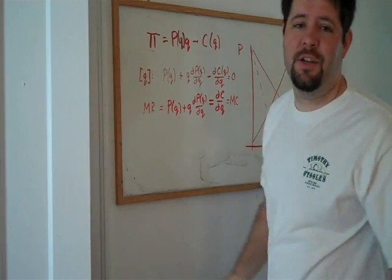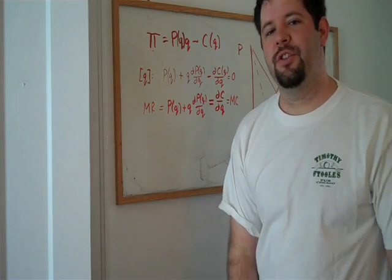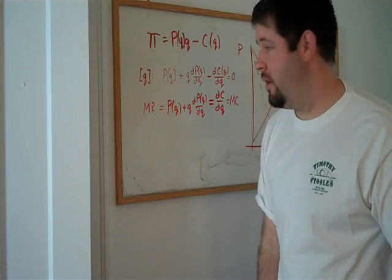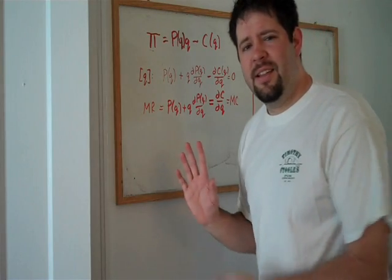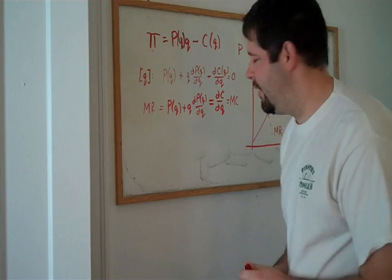You just set up a profit maximization problem, find the first order condition, and solve that first order condition for the profit maximizing quantity. Now, let's take a look at this term here a little bit more closely and see what we can learn.